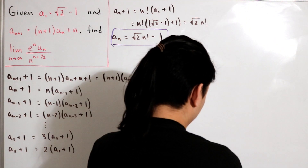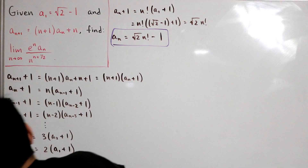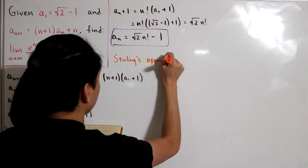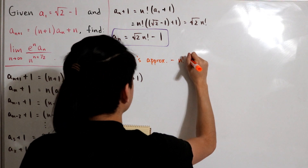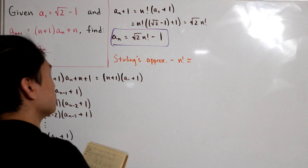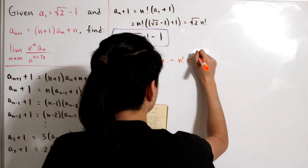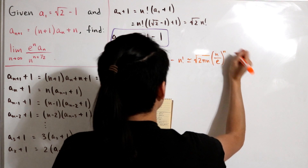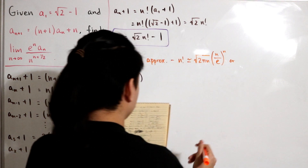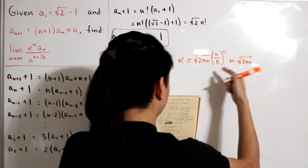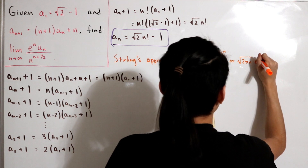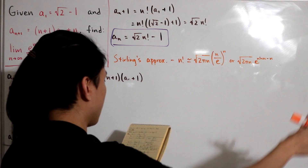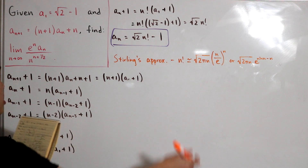Next, let's define Stirling's formula — also called Stirling's approximation — which approximates factorials. It states that n! is asymptotic to the square root of 2πn times (n/e) to the power n. We can rewrite this as √(2πn) times e to the power (n·ln n − n). Asymptotic means the ratio of both quantities tends to 1 as n tends to infinity. Using this, we can do a substitution in our limit.